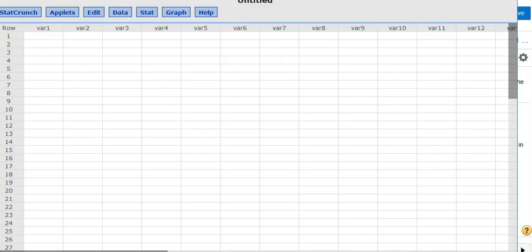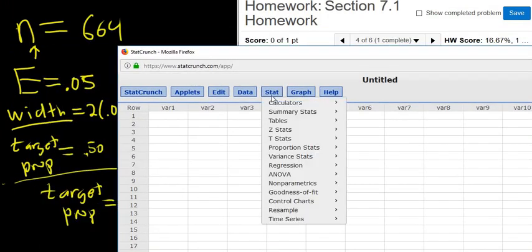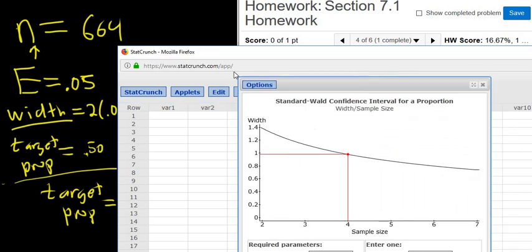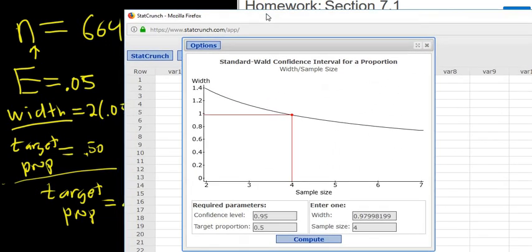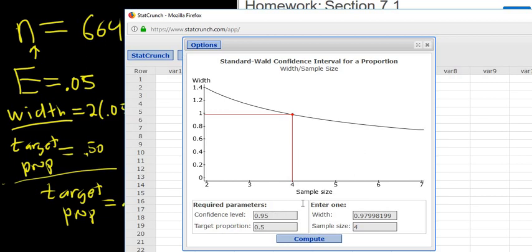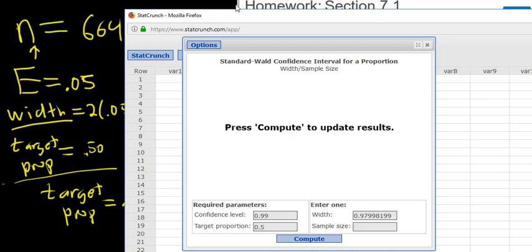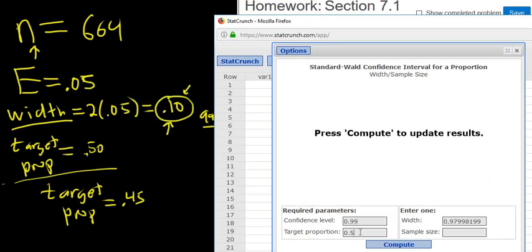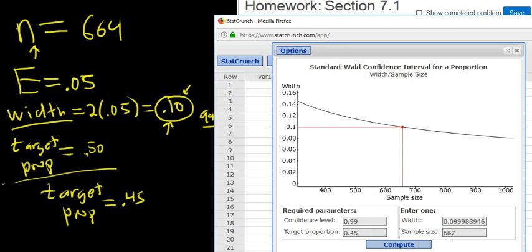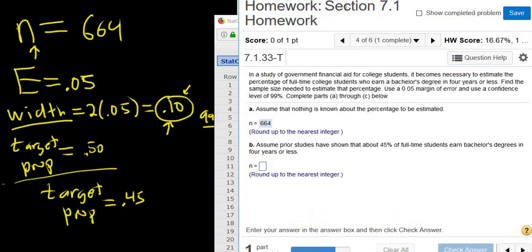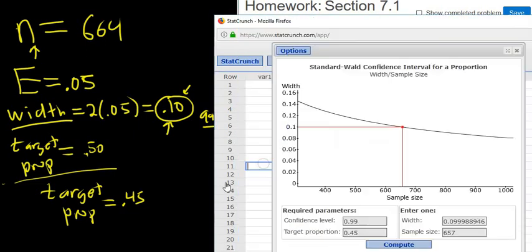So we go to stat crunch. Then we go to stat, proportions, one sample, and again, width sample size. Okay. And then we just enter the level, which was 99. We change the target proportion this time to 0.45. And the width is still 0.1. Just make sure everything looks good. You click compute. There's the answer, 657. So the answer in this case is 657.